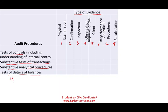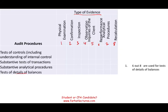Now, about risk assessment procedure — this is when we understand the whole entity; it's not really an audit procedure by itself. We're going to match the audit procedure with the type of evidence. When sitting for the exam, you want to be comfortable with how these fit together. I'll start with test of detail balances — the majority of evidence types go with test of detail balances.